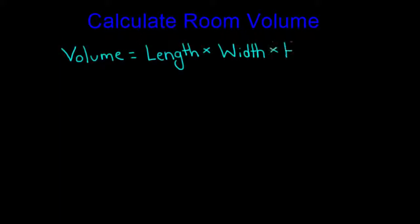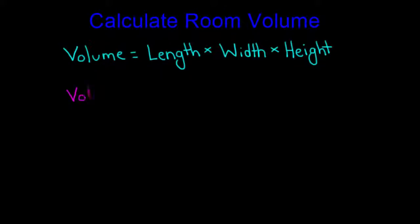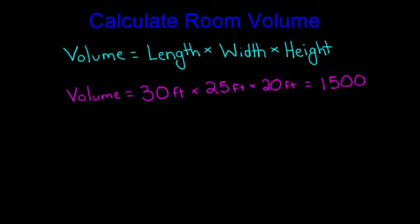After the measurements are taken, the volume of the room can be calculated using the equation volume equals length times width times height. In our example, the length of the room is 30 feet, the width of the room is 25 feet, and the height was 20 feet. This gives us a volume of 15,000 cubic feet.